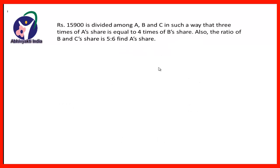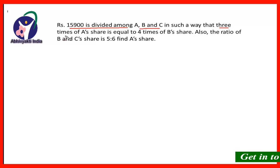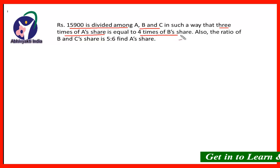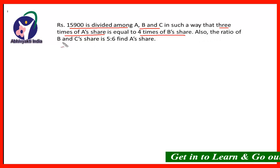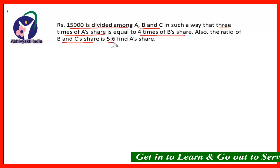The first question is: Rs.15,900 is divided among A, B and C in such a way that 3 times of A's share is equal to 4 times of B's share. Also, the ratio of B's share to C's share is 5 to 6. Find A's share.